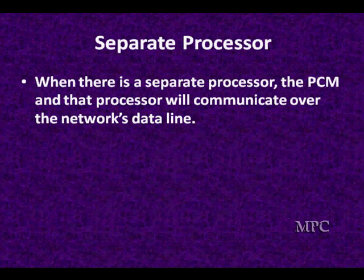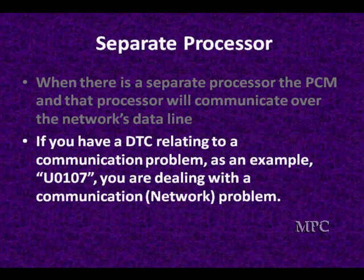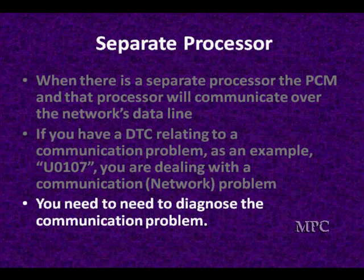When there's a separate processor, the PCM and that processor will communicate with each other over a network data line — and this is important. This is one of the areas that has been lacking in most people's diagnostics. If you have a diagnostic trouble code relating to communications problems — for example, U0107 — you're dealing with a communications network problem. We found this is an area where many people are making mistakes and not having sufficient diagnostics to locate the cause of the problem. You'll need to diagnose the communications problem, and we want to give you a quick overview of communications particularly for this aspect of communicating with a separate module.